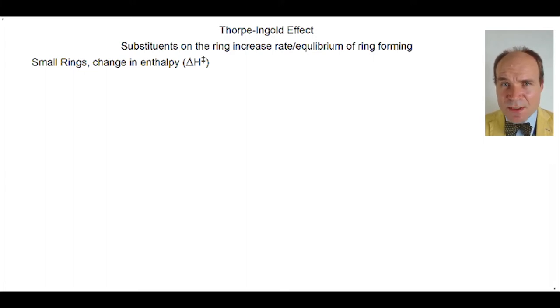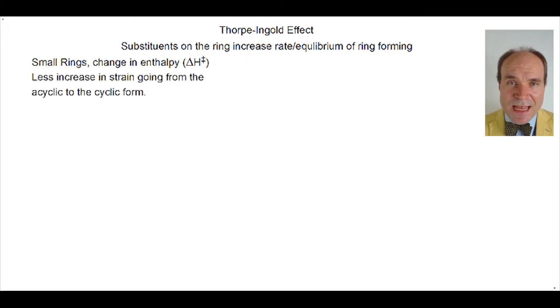This reduces the additional bond angle contraction that must occur when the ring forms. Another way of thinking about the same idea is that the difference between the acyclic angle strain and the angular ring strain is less when we have a substituent present.